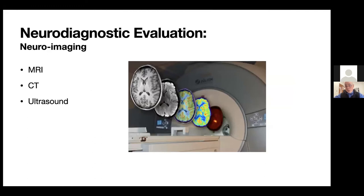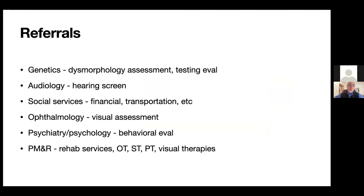We can get neuroimaging — we order lots of MRIs to look for signs of structural abnormalities or prior injury. We can get CTs and ultrasounds. And of course, we involve associated specialty services: if I have concerns for a genetic process, we'll include genetics for dysmorphology assessment and further genetic testing; if there are hearing and language delays, we can refer to audiology.